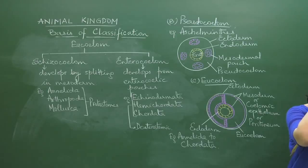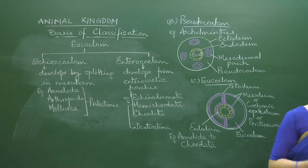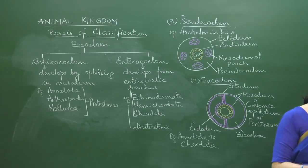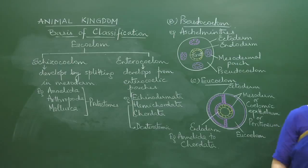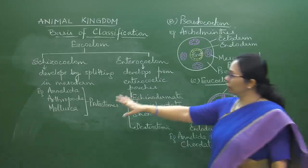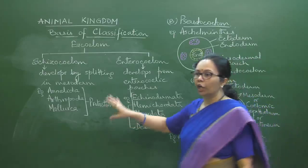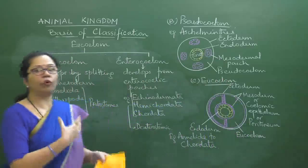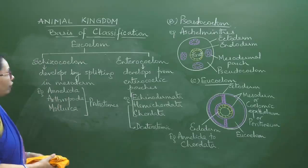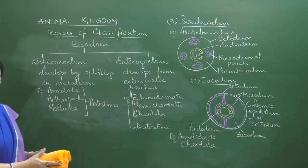Regarding arthropods being haemocoelomate: the term haemocoelom is used because arthropods have an open blood vascular system, so their coelomic space is filled with blood. Embryonically it is very much a schizocoelom, which has further modified to become haemocoelom in arthropods.